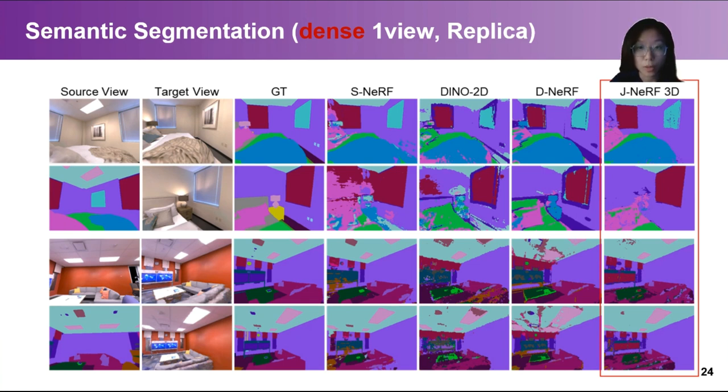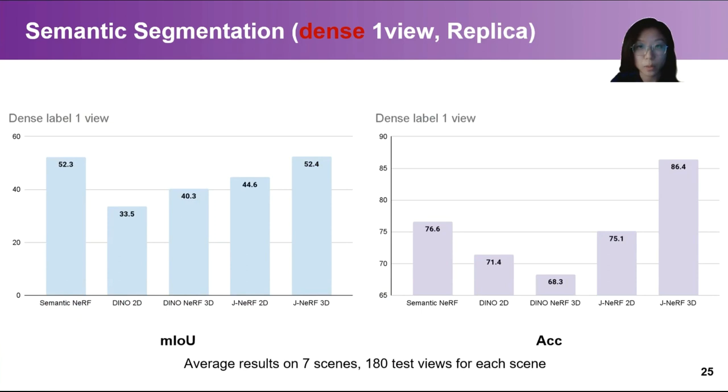Moreover, Jacobi NERF performs much better than semantic NERF on views very different from the source view. Quantitative results also show that Jacobi NERF achieves comparable performance in terms of mean IOU but avoids time-consuming retraining when the one view dense semantic labels become available.